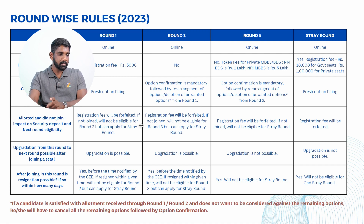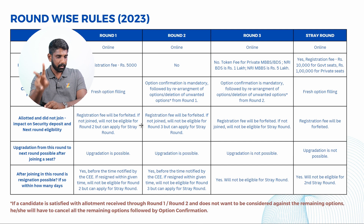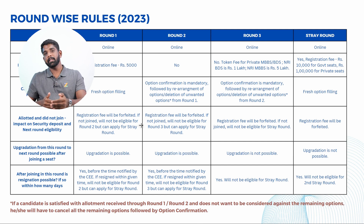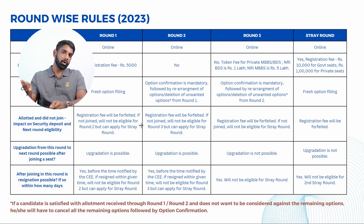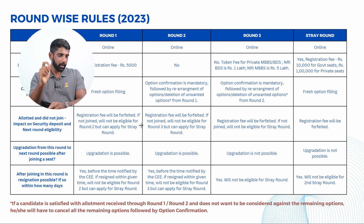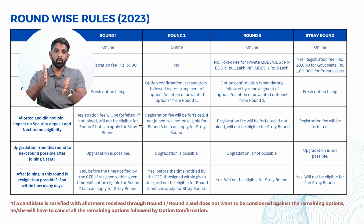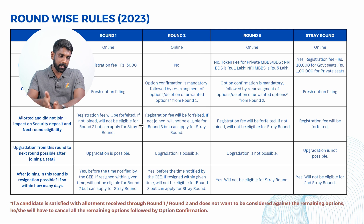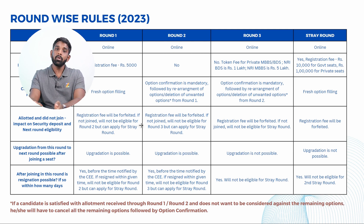In Round Three, rearrangement of options and deletion of unwanted options is possible. If you are satisfied with a seat in Round Two and don't want other options to be considered, you can remove those remaining options. Once you complete the option confirmation stage, a seat will be allotted.